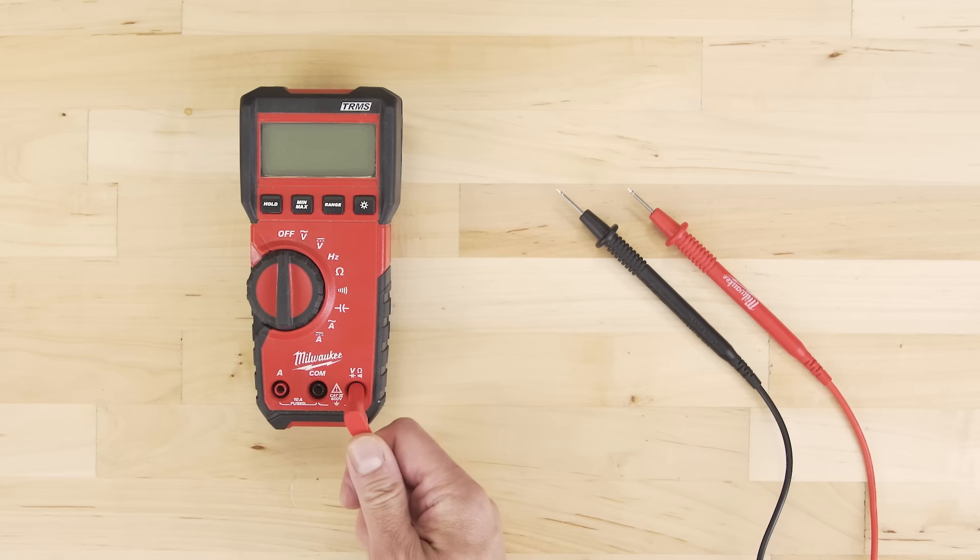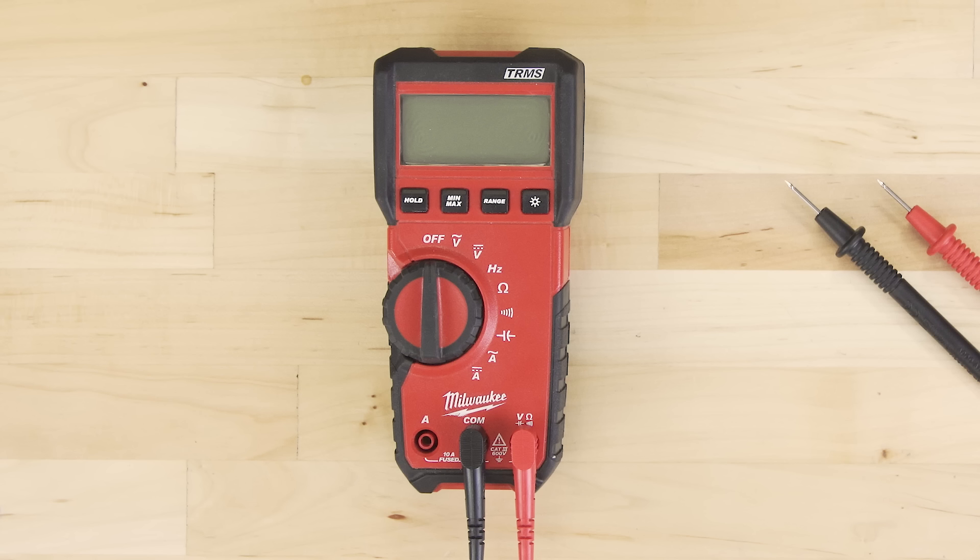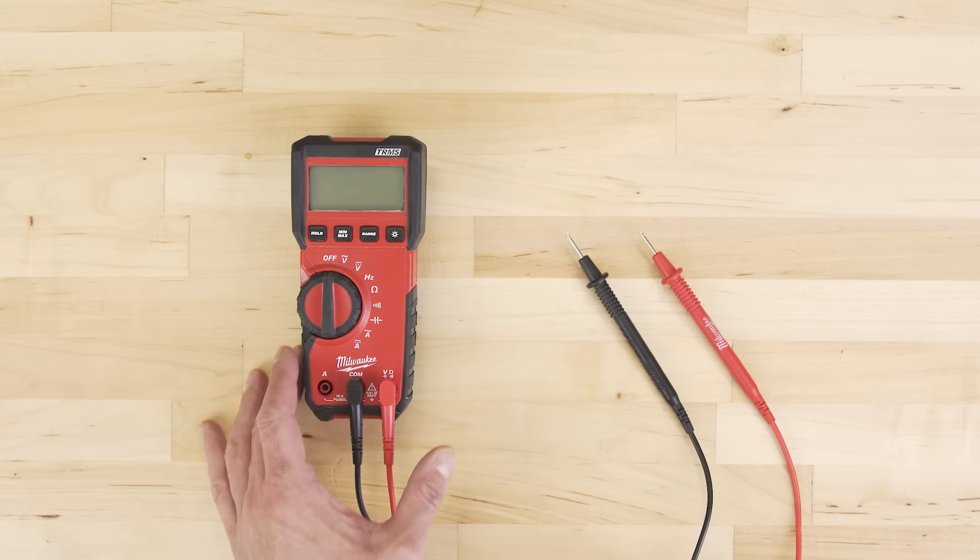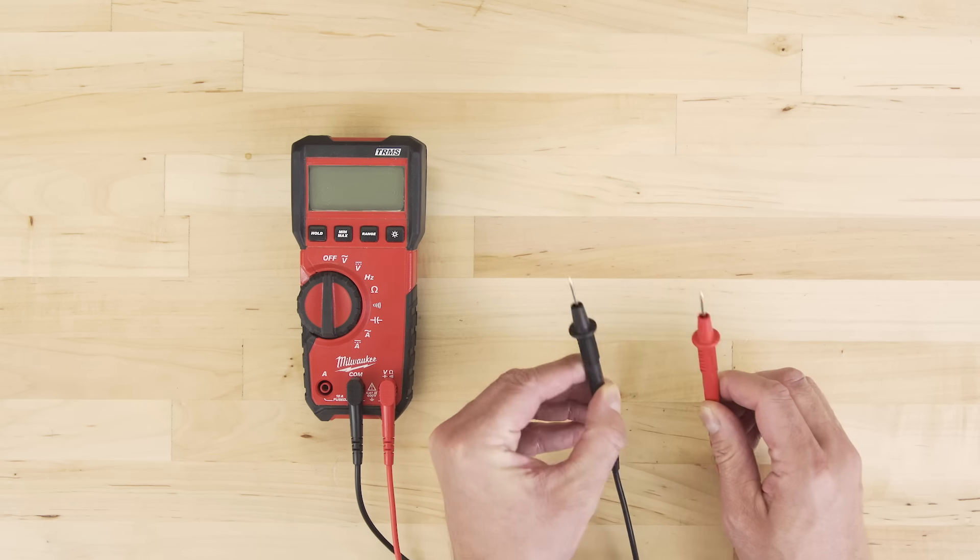To set up the multimeter, plug the meter leads into the terminals. Usually they are color coded red for positive, and black for neutral or common. Some meters will have two positive terminals. One terminal is for voltage and resistance, and the other is for measuring amperage. Always inspect the multimeter before use. Never use a multimeter that has a damaged case or test leads with nicked or damaged insulation.